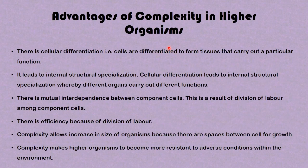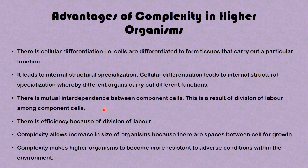Now we'll be looking at the advantages of complexity in higher organisms. There is cellular differentiation — cells are differentiated to form tissues that carry out a particular function. This leads to internal structural specialization, whereby different organs carry out different functions. There is also a mutual interdependence between component cells, which is a result of division of labor among component cells.